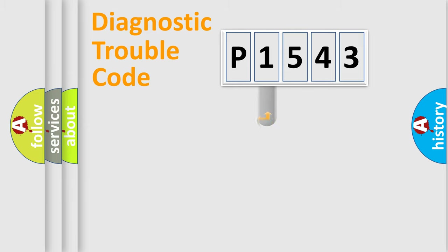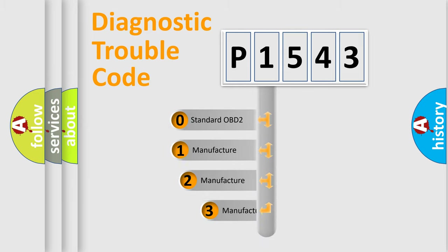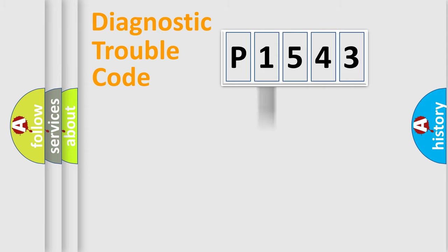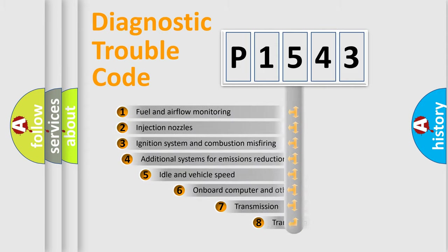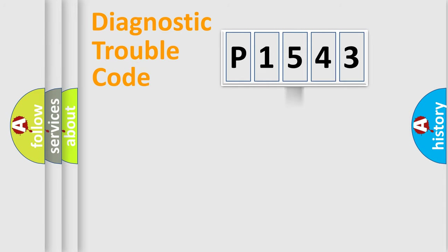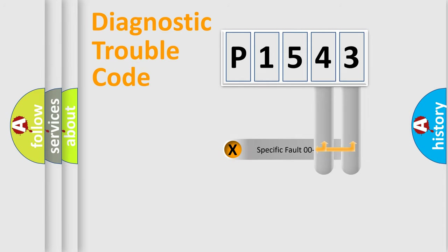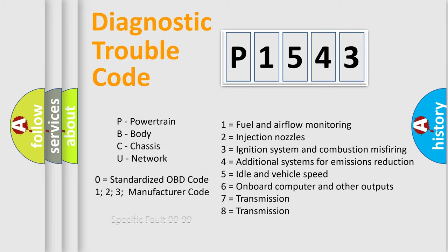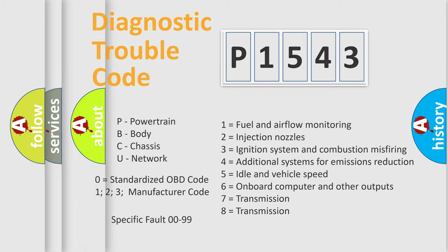This distribution is defined in the first character of the code. If the second character is expressed as zero, it is a standardized error. In the case of numbers 1, 2, or 3, it is a more specific expression of a car-specific error. The third character specifies a subset of errors. The division shown is valid only for the standardized DTC code, and only the last two characters define the specific fault of the group. Such a division is valid only if the second character is expressed by the number zero.